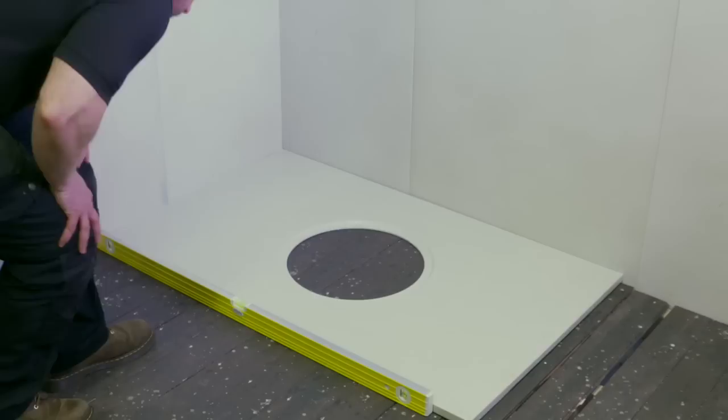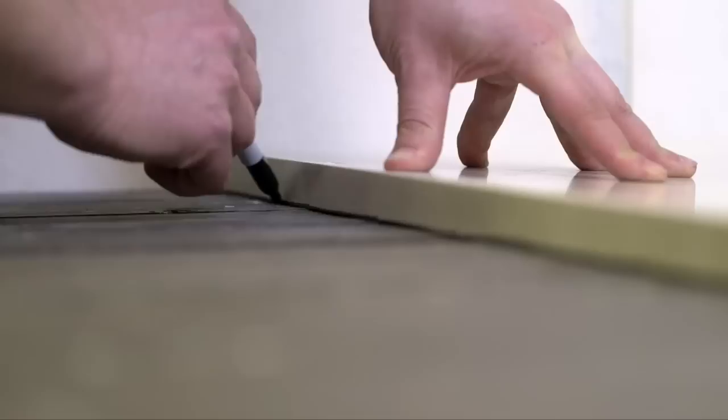To start the preparation, begin installing the deck by checking that the wet room floor is level. If not, then this must be resolved first. Please contact our technical department for further advice if required. Mark out the outline of the deck and cut the floorboards using a suitable saw, then remove the boards.